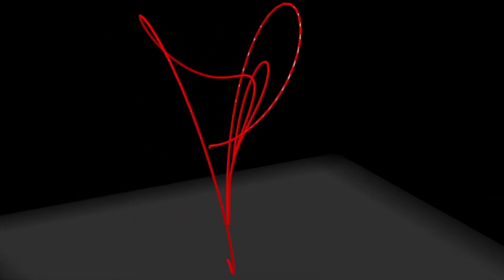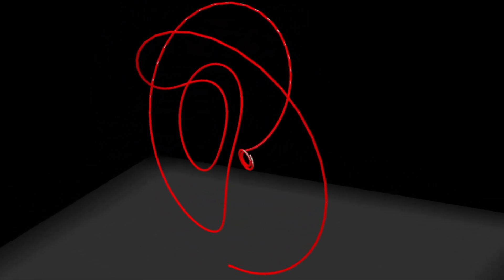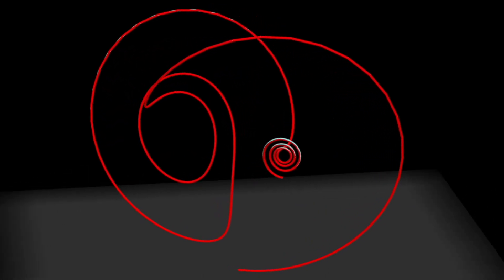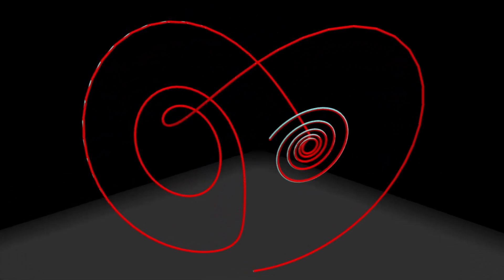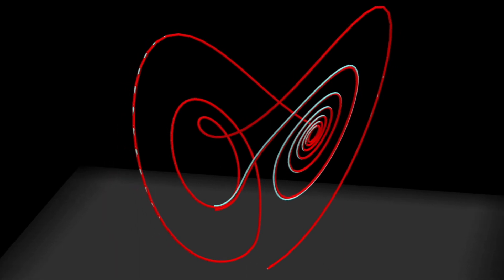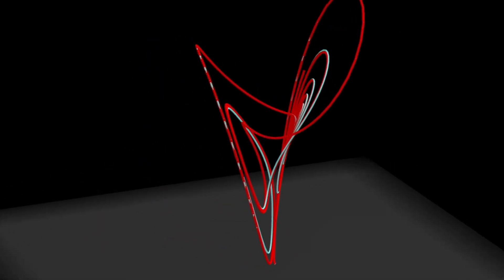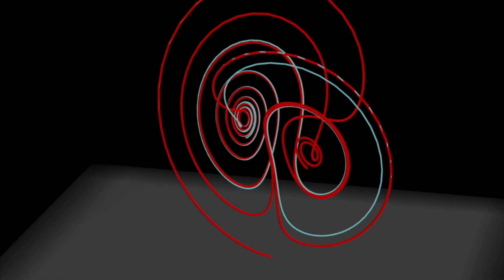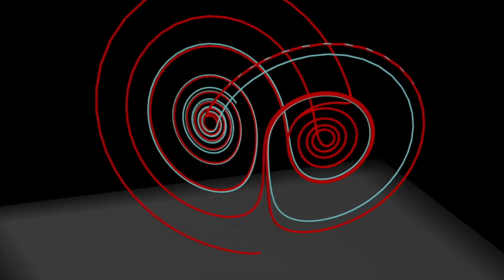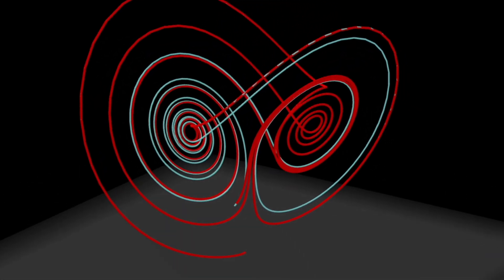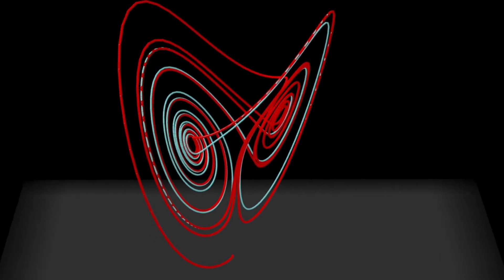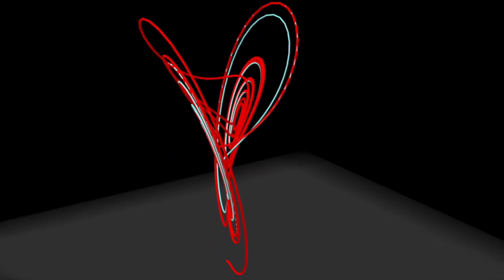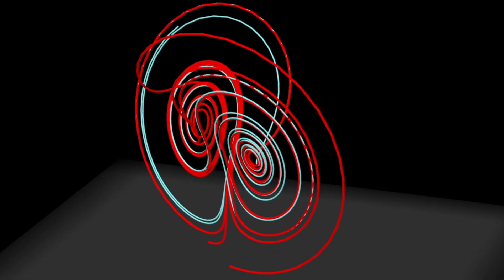The Lorenz system, also known as the Lorenz Attractor, has many interesting mathematical properties. One of them is that the system has sensitive dependence on initial conditions. This means that starting points that are very close will, over time, separate. In other words, no matter how well you can estimate the current state, the long-term future — though deterministic — is uncertain.